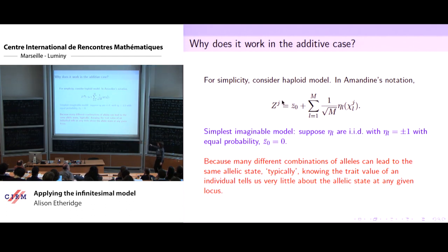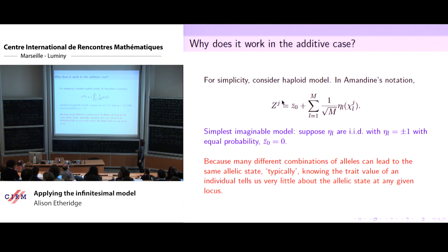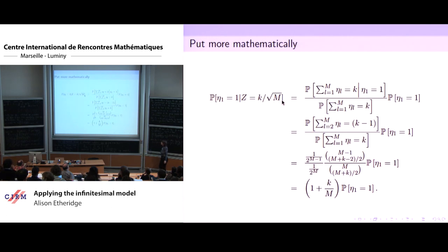We're going to suppose that the scaled additive effects e_l are just i.i.d. mean-zero Bernoulli random variables. The trait value is the position of a random walk started from z_0 bar after m steps, scaled with one over root m. If you tell me the trait value, I'm really not learning anything very much about the allelic state at any given locus.